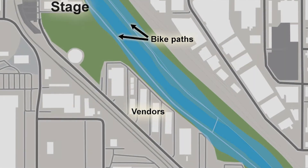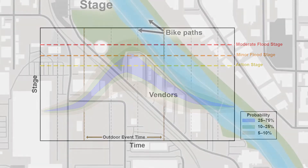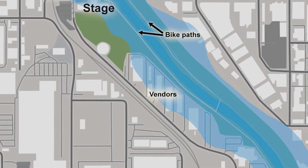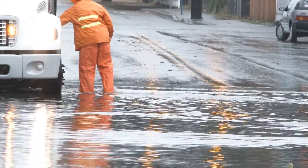This would cause minor impacts such as closure of the pedestrian and bicycle pathways. A smaller probability may exist for a moderate flood stage associated with greater impacts such as closure of access roads and public buildings. Ensemble forecasts allow forecasters to provide a more complete picture of a range of possibilities by incorporating forecast uncertainty, and this allows forecast users to be better informed for making decisions.